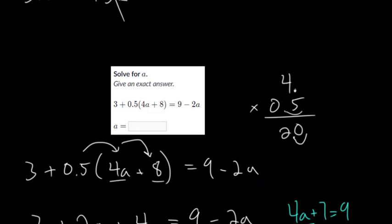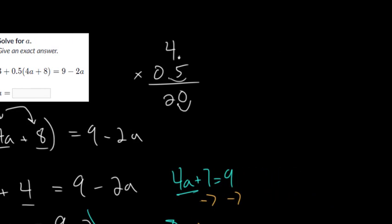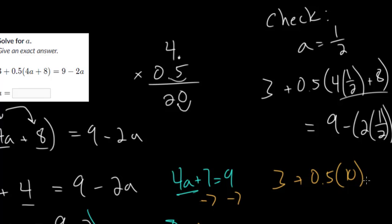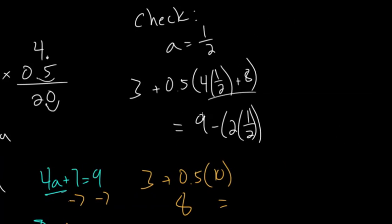We would check our work right now. Let's do that. We're going to plug in a is 1/2. So we're going to check. And we want to find out, does a equal 1/2? So you get 3 plus 0.5, parentheses 4 times 1/2, plus 8. And then this is supposed to be equal to 9 minus 2 times 1/2. And so let's simplify. So we'll start in the parentheses. And 4 times 1/2 is just 2. So you get 2 plus 8, which is 10. So you get 3 plus 0.5 times 10. So we effectively want half of 10, which is 5. And 3 plus 5 is 8. So this all simplifies to 8 on the left side. And on the right side, you have 9 minus 2 times 1/2. 2 times 1/2 is just 1. Half of 2 is 1. So you get 9 minus 1 on the right. And 9 minus 1 does equal 8. So we can feel very confident this is, in fact, the right answer.